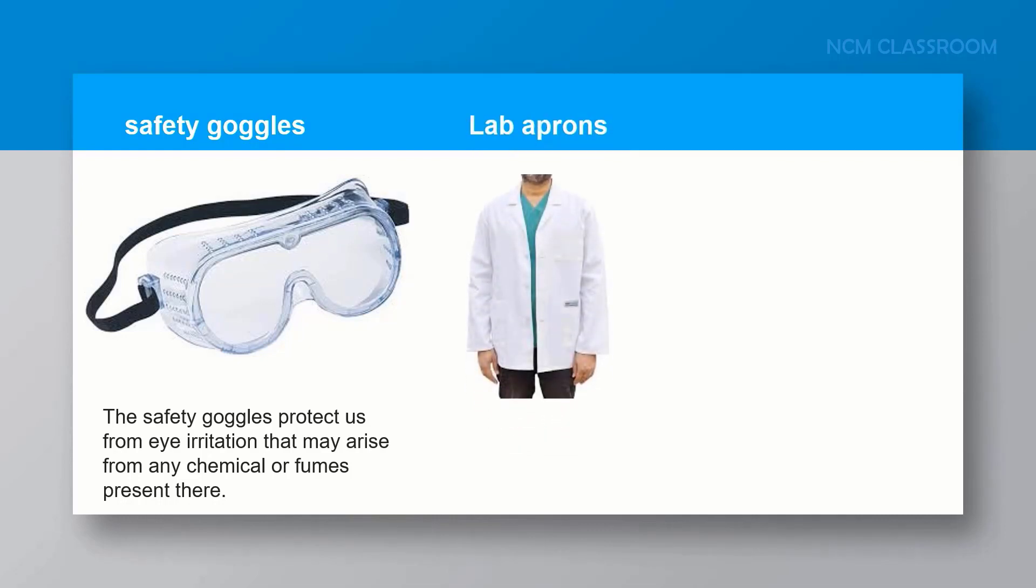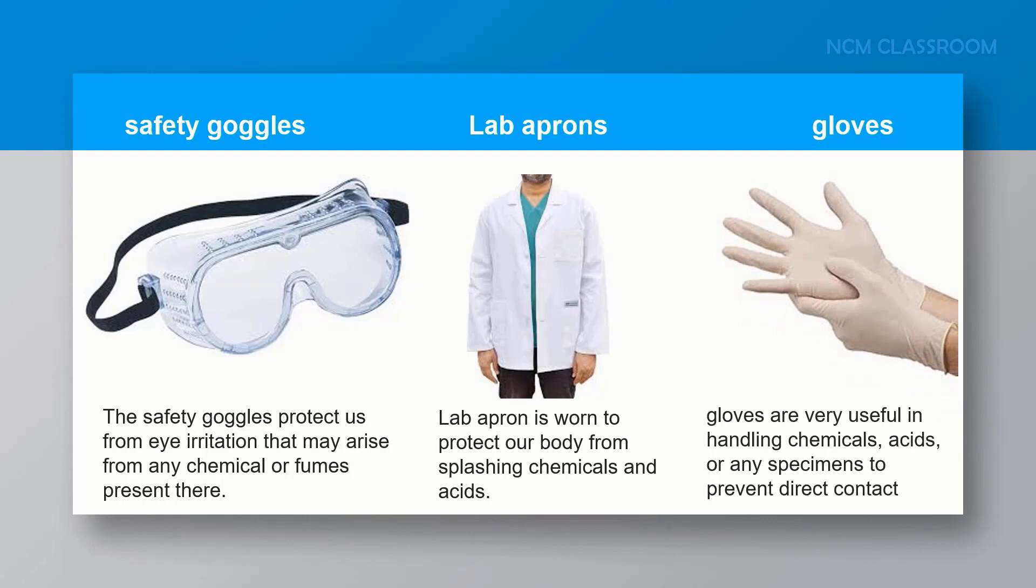Lab aprons are worn to protect our body from splashing chemicals and acids. Gloves are very useful in handling chemicals, acids, or any specimens to prevent direct contact.